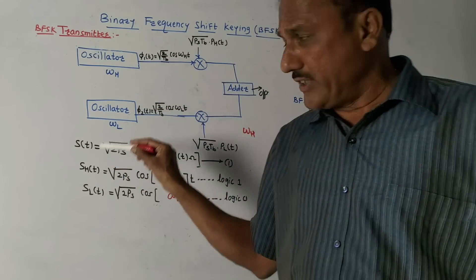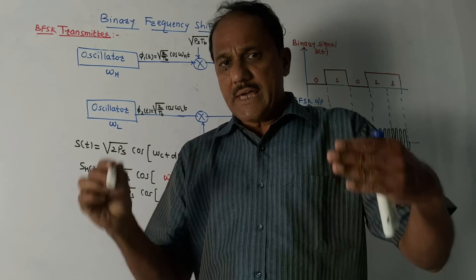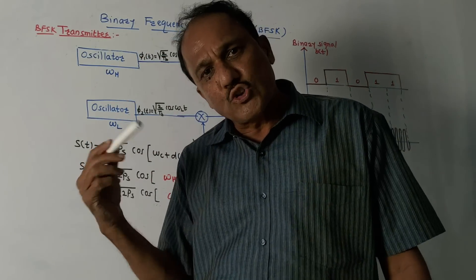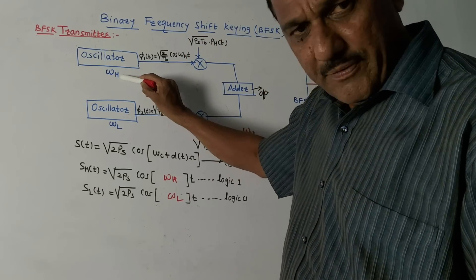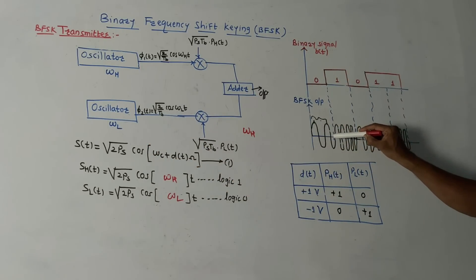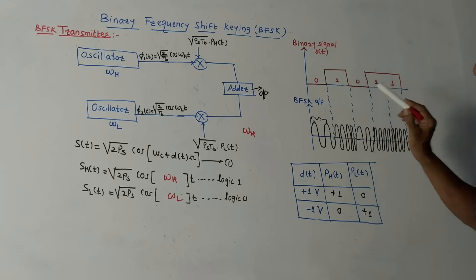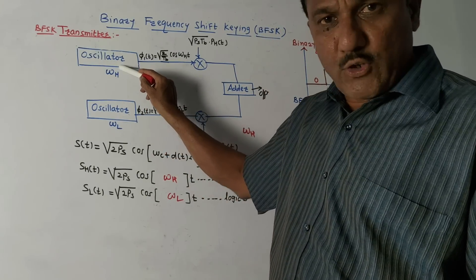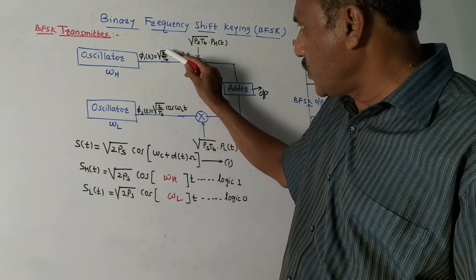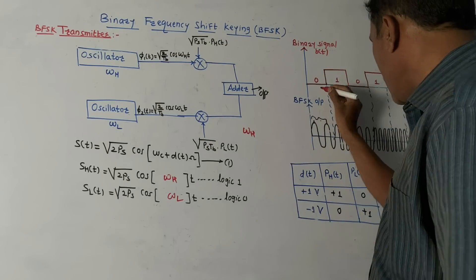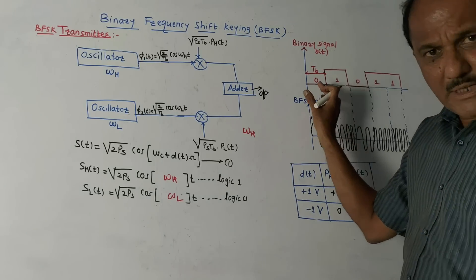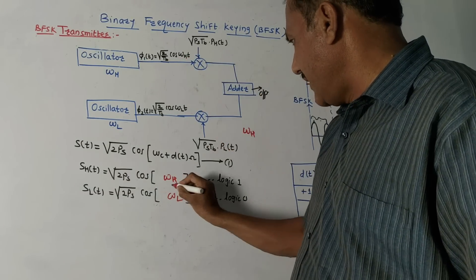Now, looking at the transmitter section — how the BFSK signal is generated. There are two oscillator blocks generating carrier frequencies: one for ωh (higher frequency) and another for ωl (lower frequency). The output of the upper carrier oscillator is φ1(t) = √(2/Tb) · cos(ωh·t), where Tb is the bit duration. The second φ2(t) is related to lower frequencies in the same way.